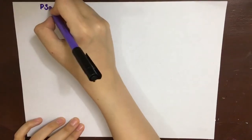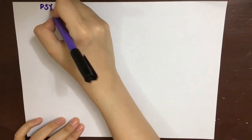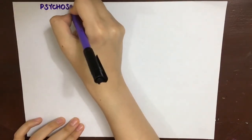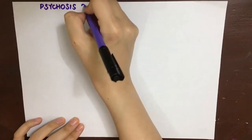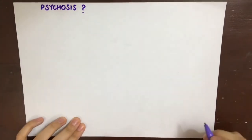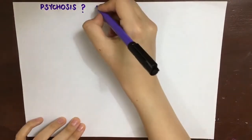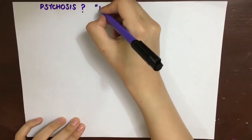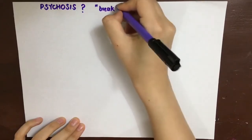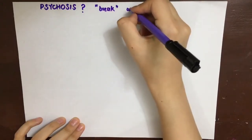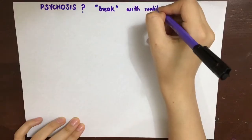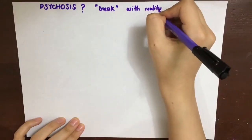What is psychosis? Psychosis is a severe mental disorder in which thought and emotions are so impaired that contact is lost with external reality. It is actually a syndrome or a group of symptoms where there is a break with reality.